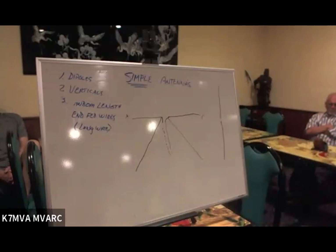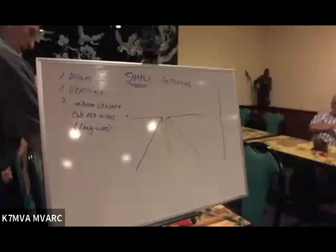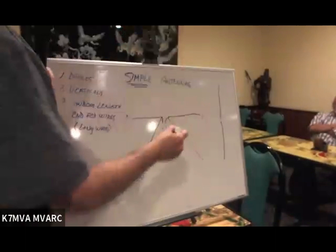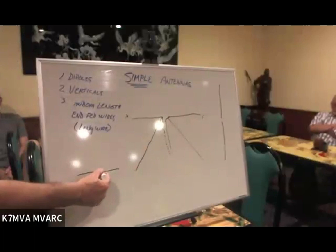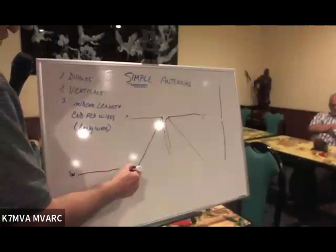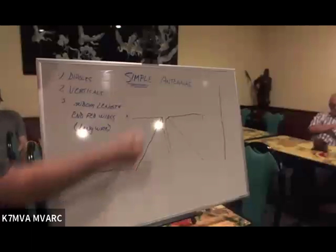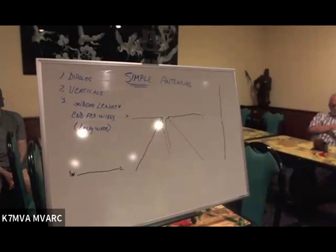The only thing that changes when you change the configuration of these things is the radiation pattern. For a horizontal dipole, we're going to look at it from the top. Let's make this west and make this east. So this antenna, looking down on this dipole, is now east and west.